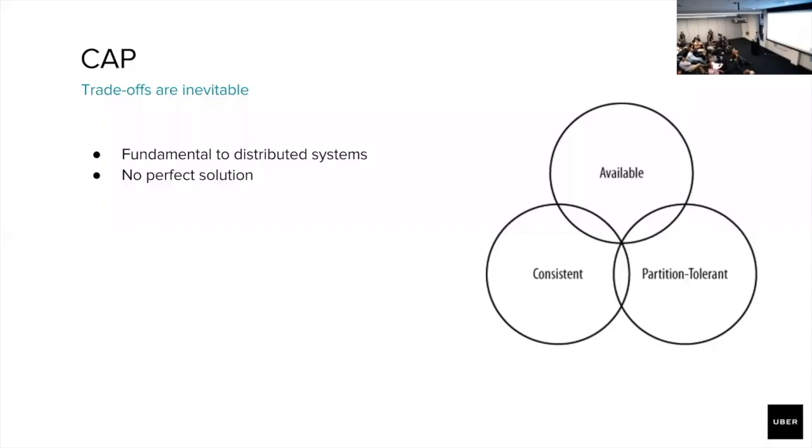First, we need to get an understanding of distributed systems problem space, so I'm going to talk about the CAP theorem. The CAP theorem is a fundamental part of distributed systems. It describes the trade-offs that we need to make when designing a fault-tolerant system. Do we need availability, consistency, or partition tolerance? During failures like network partitions, we can only guarantee two of the three.